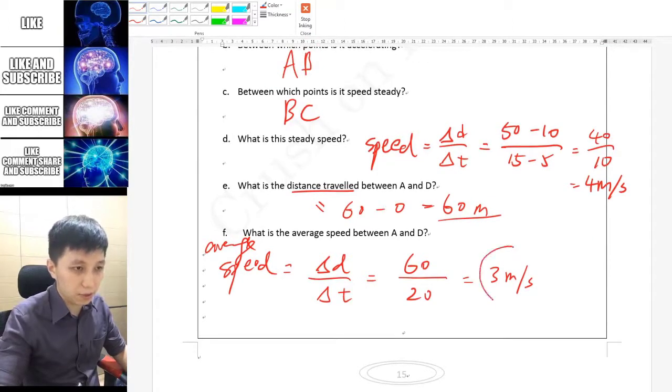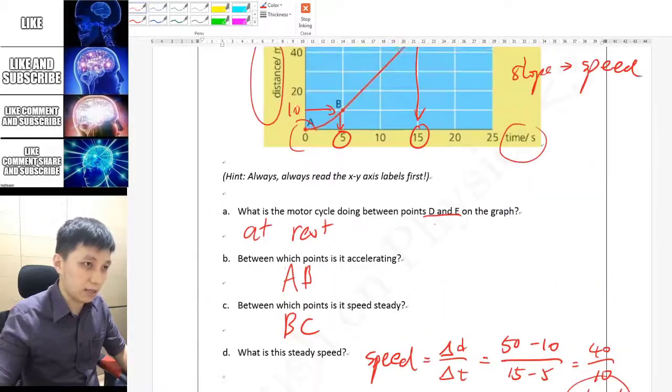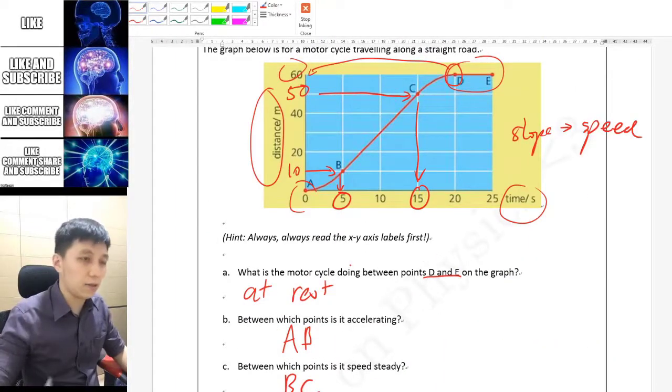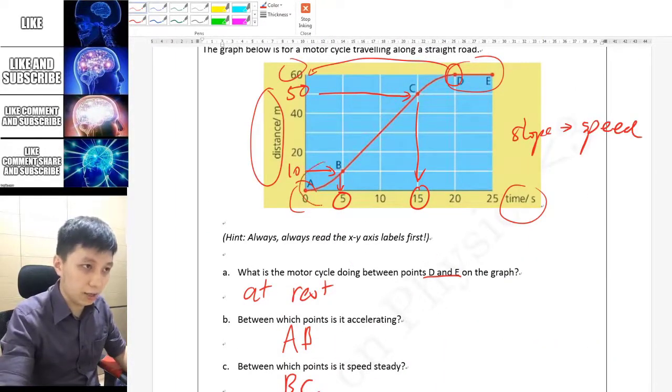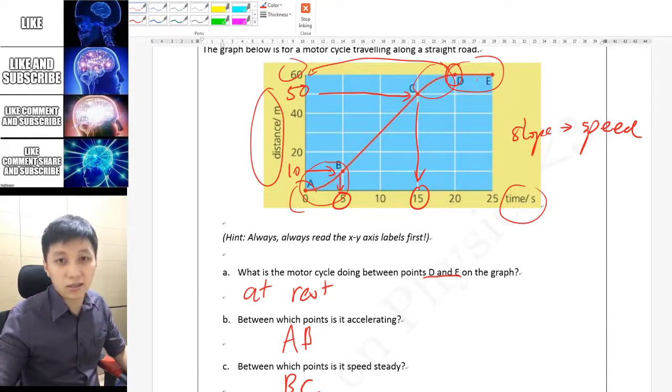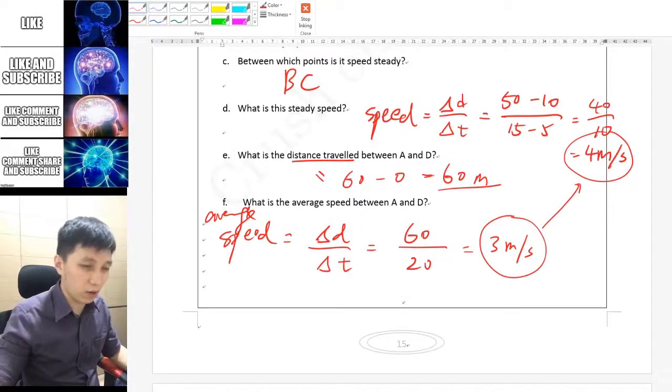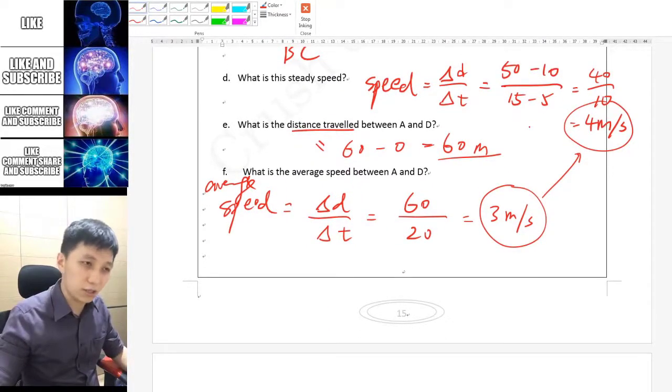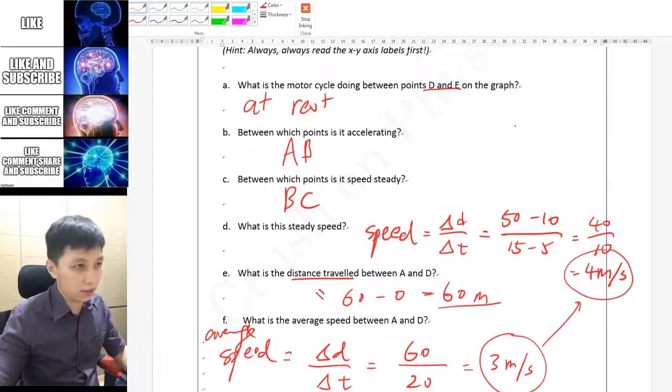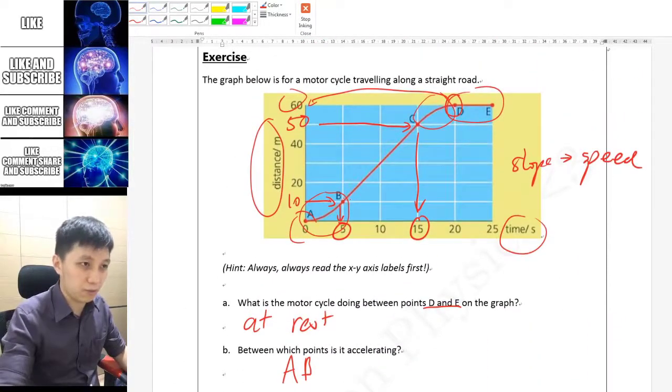You may realize that the speed here is different from what we calculated earlier for the steady speed. That's very normal because here this is not at the greatest speed. That's why the average is slightly lower than the time when you have the speed between B and C.